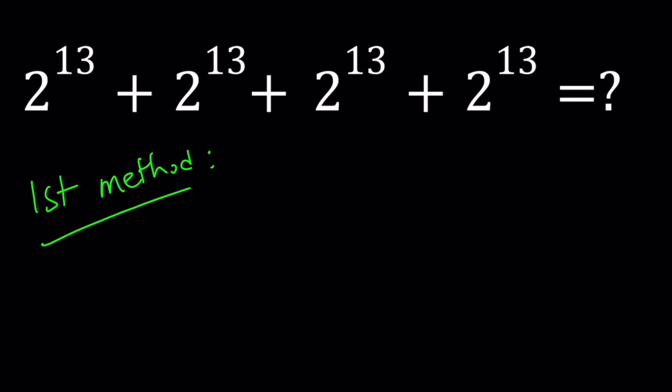So for my first method I would like to do the following. Since I have the same number four times, I can basically write it as 4 times 2 to the power 13. And 4 is 2 to the second power.